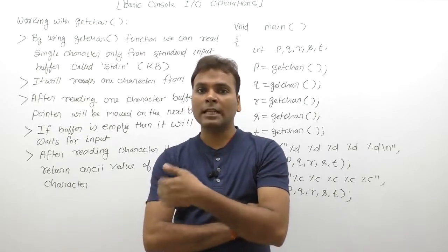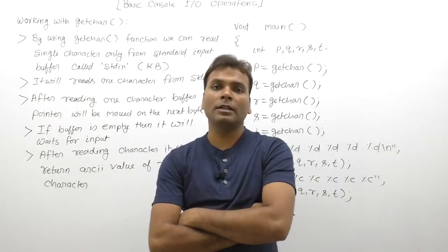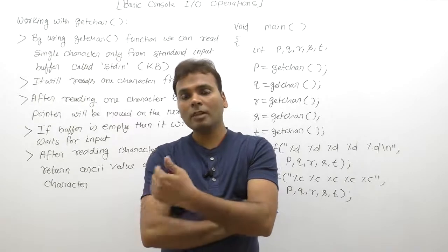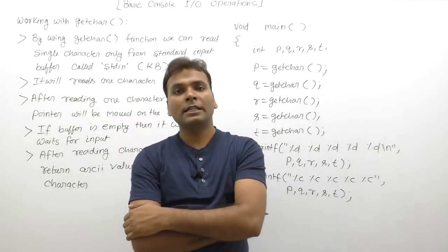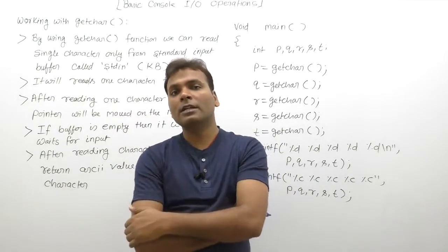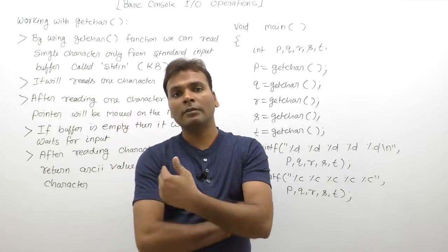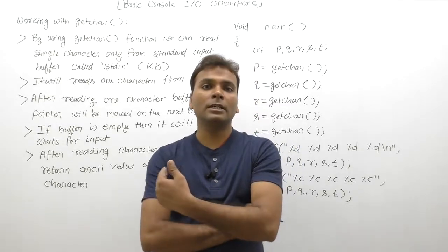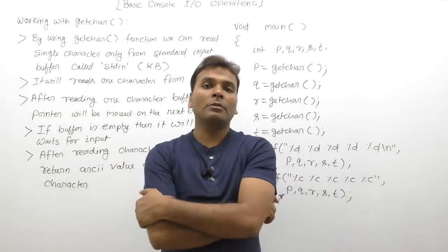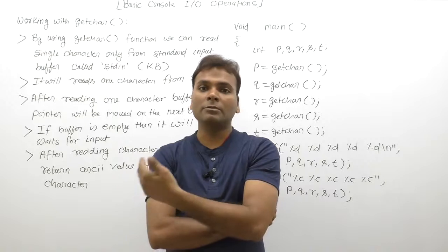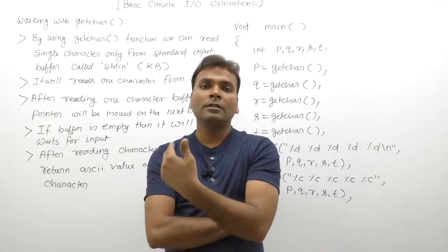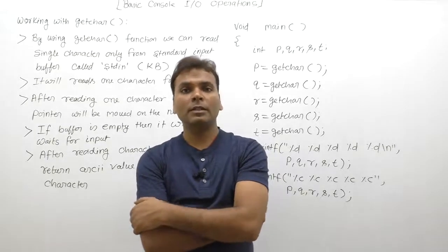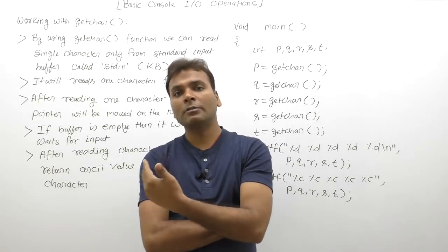The getc() function reads data from the standard input buffer stdin, which receives data from the keyboard. Initially, when a C program executes, the buffer may be empty. If the buffer is empty and no input character is found, the function will wait until a character is entered by the user.